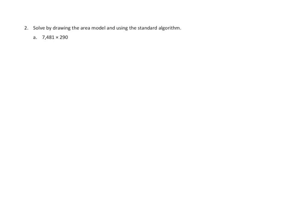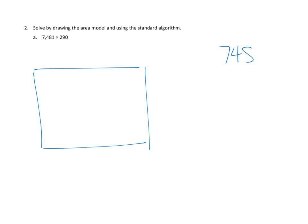Let's take a look at Problem Number 2. We are asked to solve by drawing the area model and using the standard algorithm. We've got 7,481 times 290. We would set up 7,481 times 290, with the smaller product here on the left-hand side.